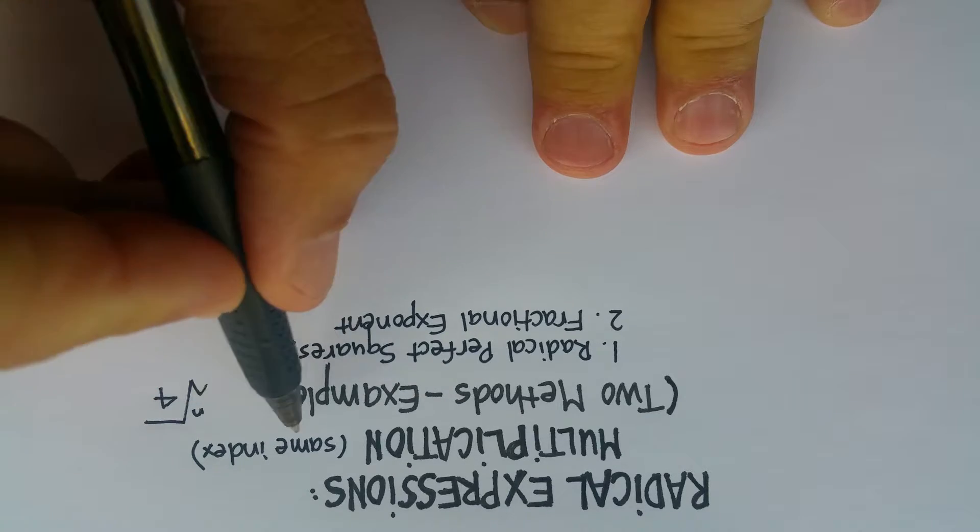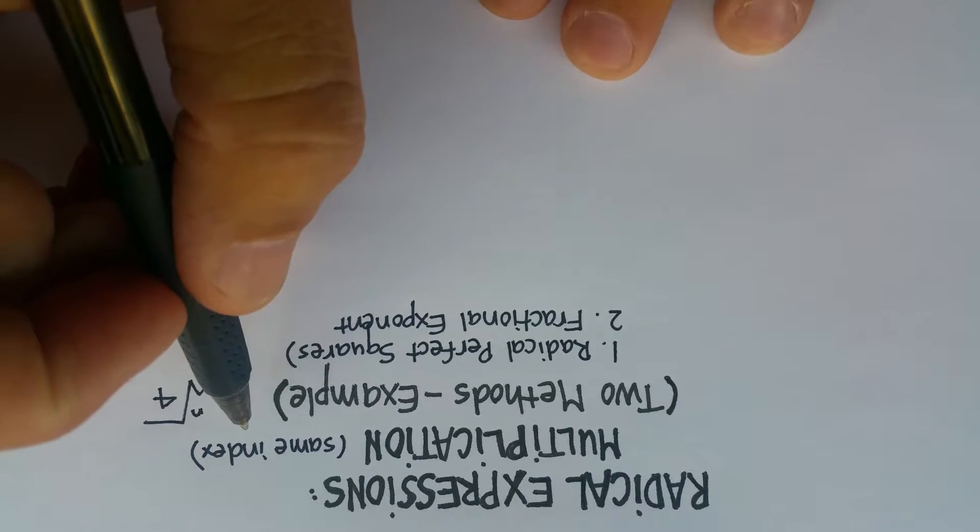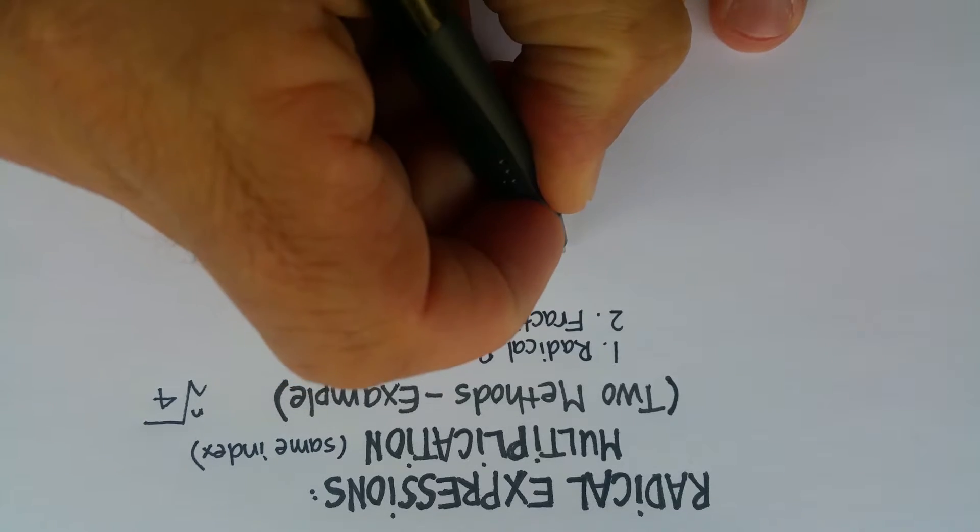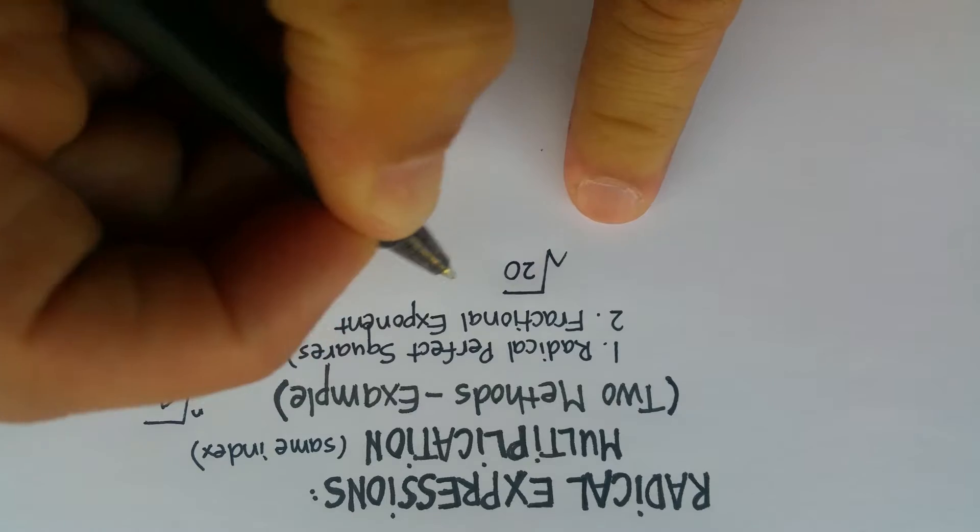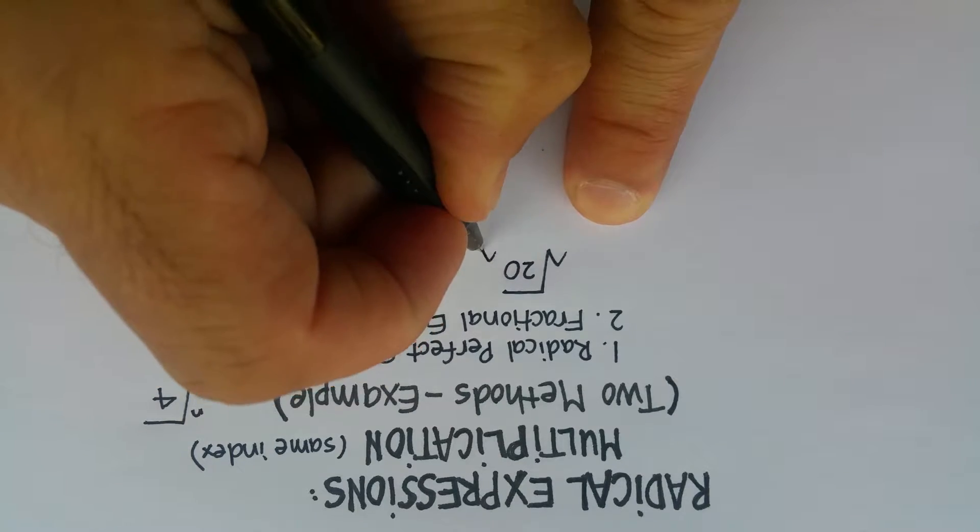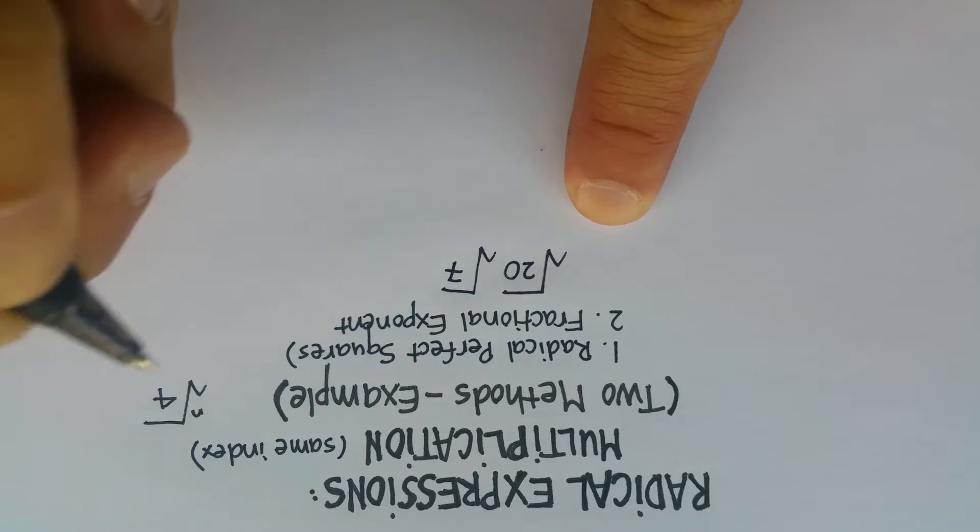And we're going to do it when the indices, plural, are the same. Okay, so here's my example. The square root of 20 times the square root of 7.